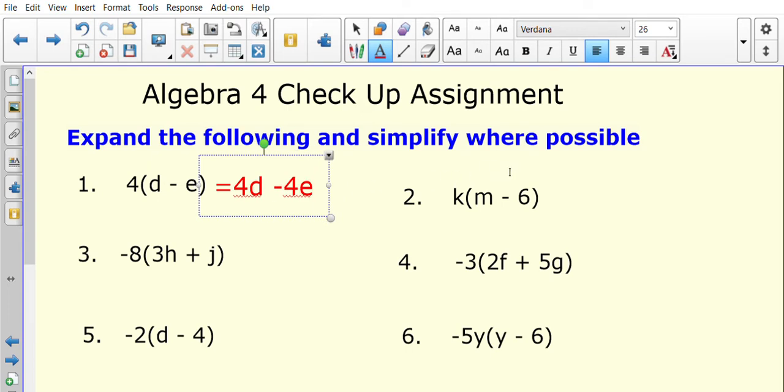Looking at number two, k times the bracket. So k times m is km, or you might have mk. Remember, it doesn't matter which order you have those letters in. And then k times negative 6, so negative 6k.